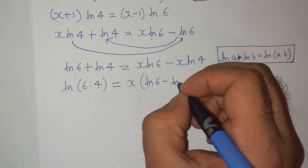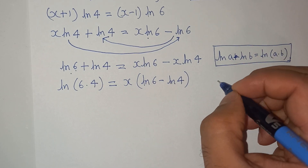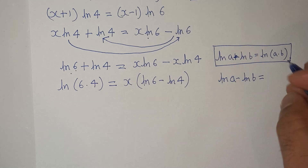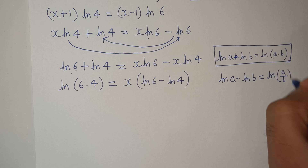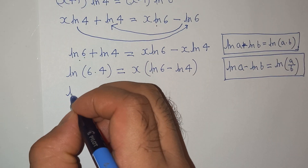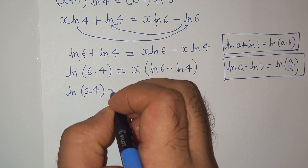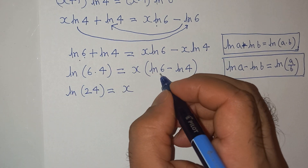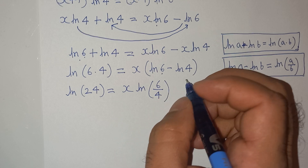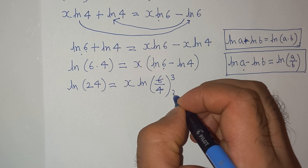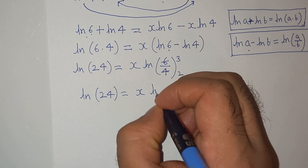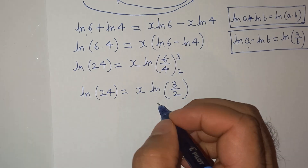On the right side, x is common so we take it out: x·(log 6 minus log 4). We apply the logarithm rule log a minus log b equals log(a/b), so log 6 minus log 4 equals log(6/4). Simplifying 6/4 gives 3/2, so we have log 24 equals x·log(3/2).